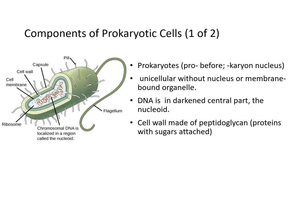What are some components of prokaryotes? 'Pro' means before, and 'karyon' means nucleus. Prokaryotes are unicellular, without a nucleus or membrane-bound organelles. DNA is typically found in a darkened central part called the nucleoid. The cell wall is often made up of peptidoglycans — proteins with sugars attached.